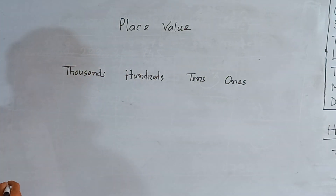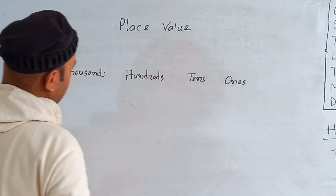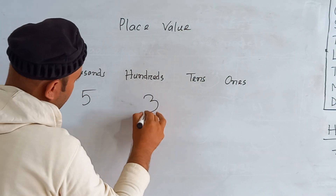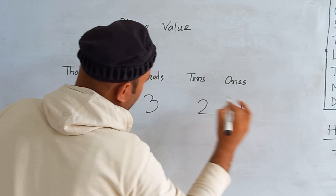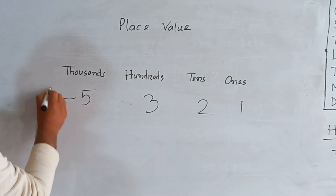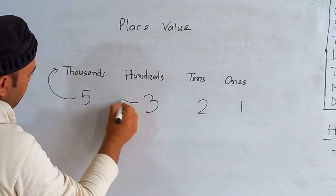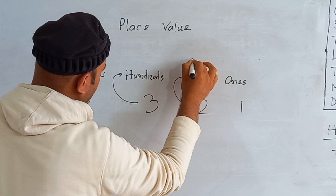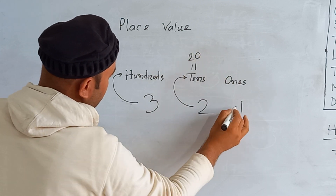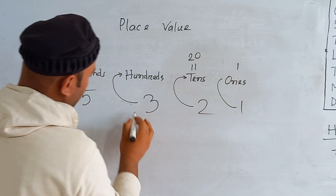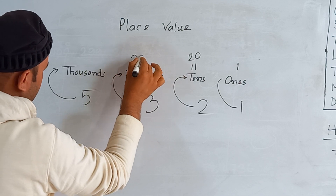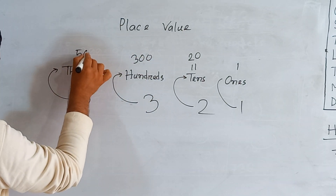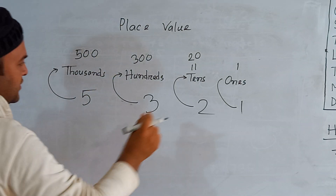For example, if I write 5321, that means this is five thousands, here is three hundreds, here is two tens — which equals twenty — and one ones. Three hundreds means 300, five thousands means 5000.